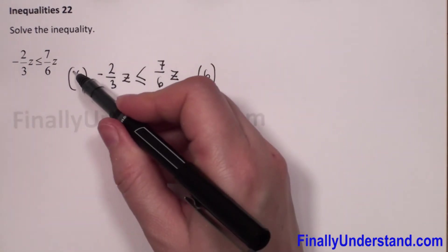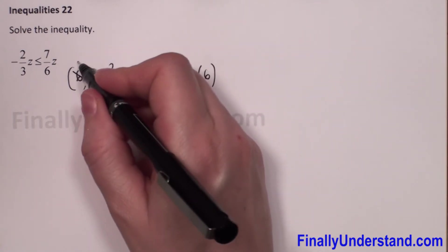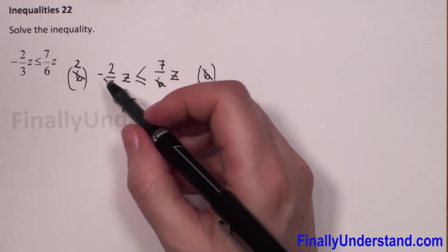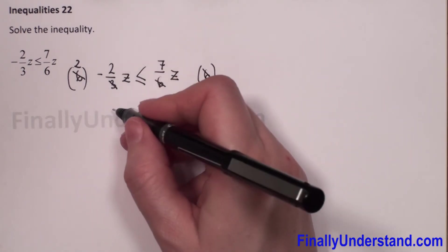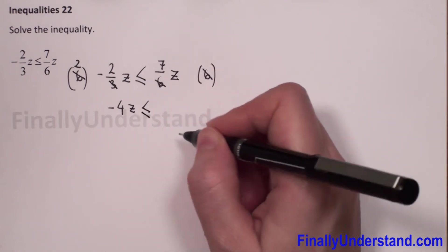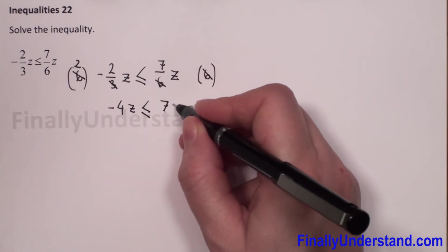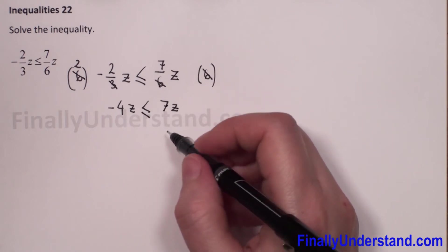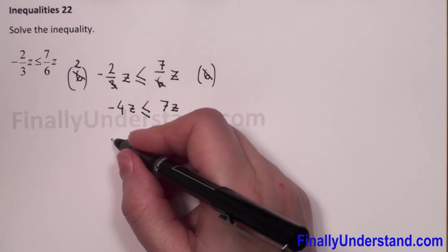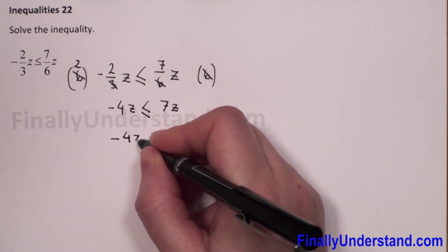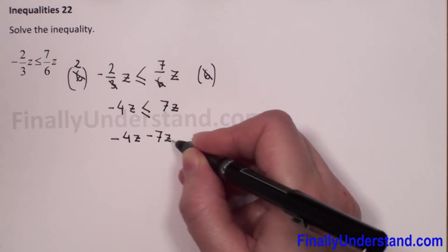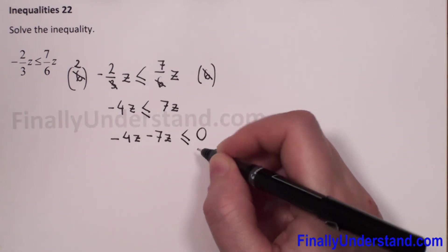So 6 and 3 will reduce, and 6 and 6 will reduce. We get 2 times negative 2, which is negative 4z, is less than or equal to 7z. Now I will collect all terms with z on the left side, so I have negative 4z minus 7z is less than or equal to zero.